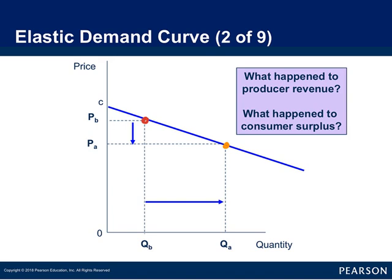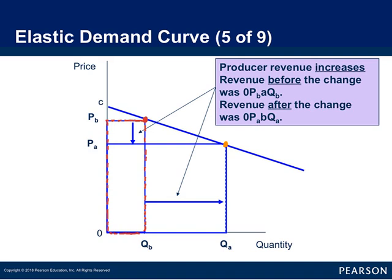But we have to ask ourselves, how much money did the producer make, and what happened to the consumer surplus in this case? When the price was at the red dot, or P-B, the entire rectangle is the demonstration of producer revenue. And as the price decreased but quantity demanded increased, the producer revenue changed.